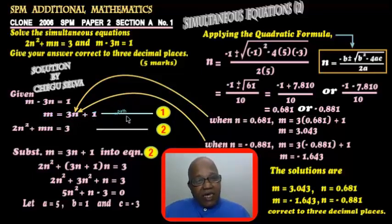Let this be equation 1. Now, it is always better to let equation 1 be like this because it is very much easier for your working. Now, let the next equation, the non-linear equation, be equation 2: 2n squared plus mn equals 3.